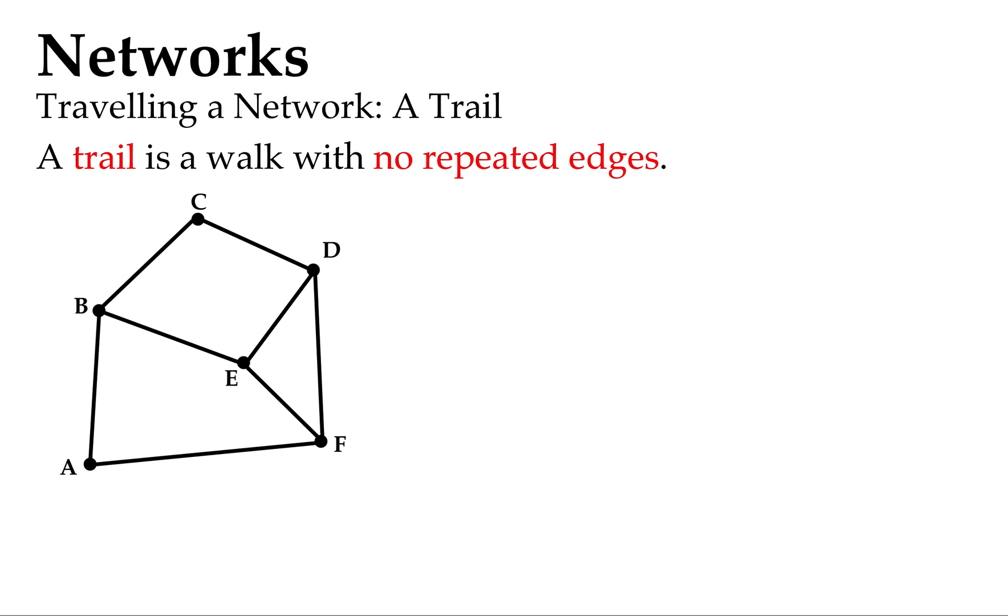So let's have a look at this example of a trail. If we go from C to B to E to D, down to F and back to E, you'll notice we haven't repeated any of the edges.